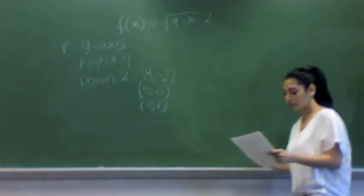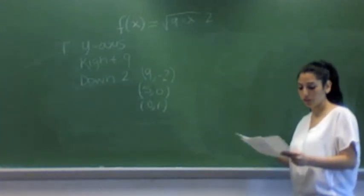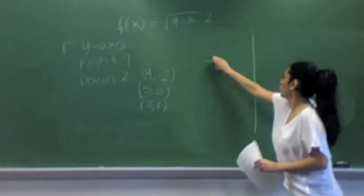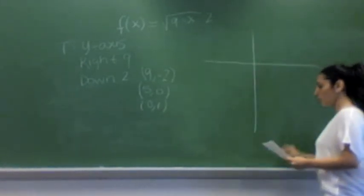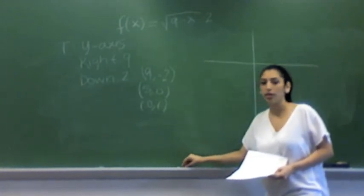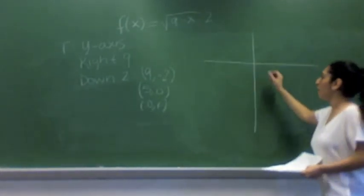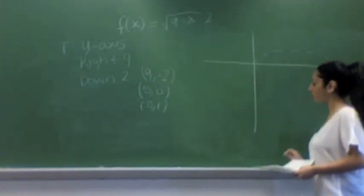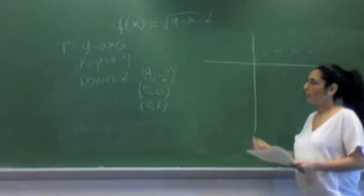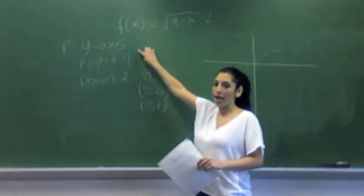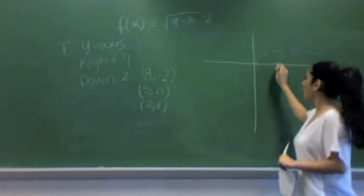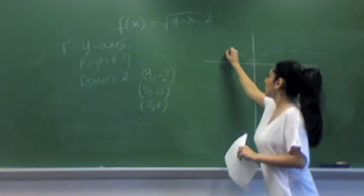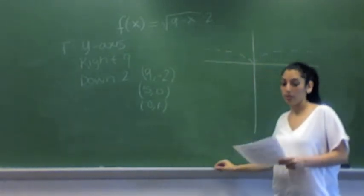Now, for the graph, the easiest thing to do is to do your reflections first. So I previously showed you guys what the parent graph of the square root function looks like. I'm going to demonstrate that with a dashed line in a different color. So our next step, we have reflection over the y-axis. So I'm going to use a different color and reflect it right now because it's really easy if you do it right from the beginning. It helps you not get confused later on the plotting.